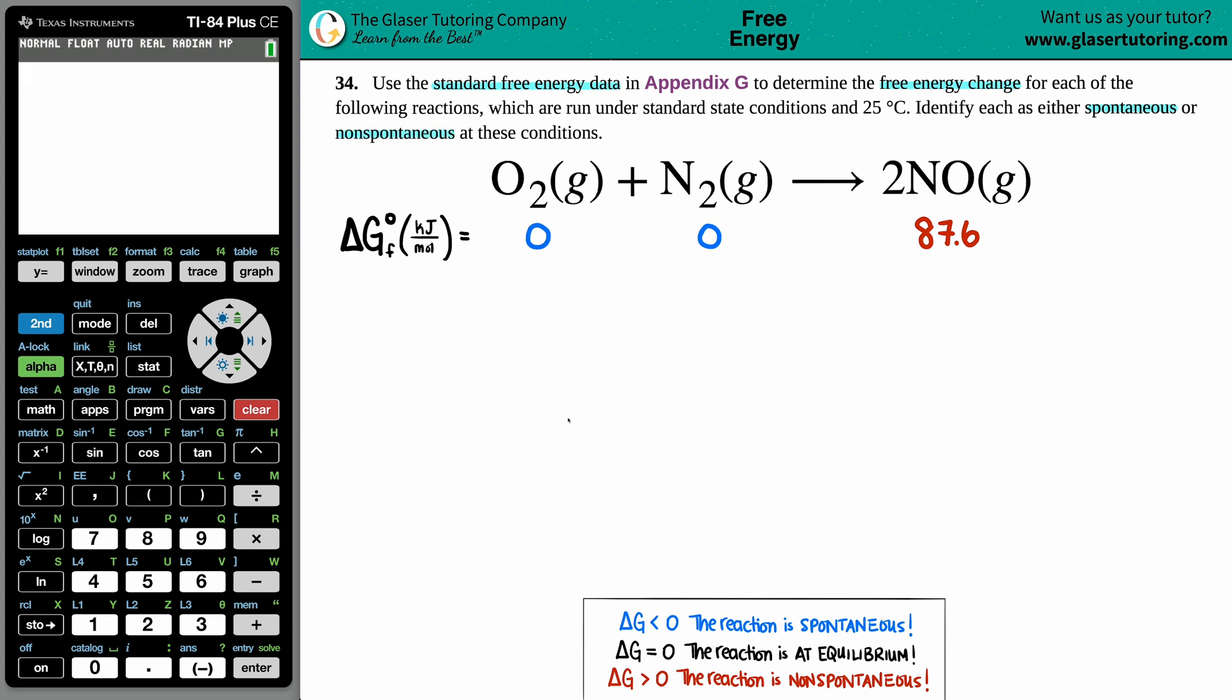Okay, so we have our balanced equation: O2 gas plus N2 gas yields 2NO gas. And because of this, we have to find the free energy change. A free energy change, any change is always represented by that delta, that triangle, final minus initial.